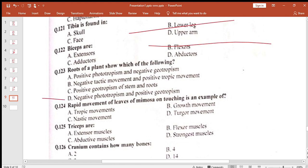Root of plant. Because root is down, gravity is down, so positive. And photo is upward and root is down, then it is negative. Rapid movement of leaves of mimosa on touching: this is trigger movement.